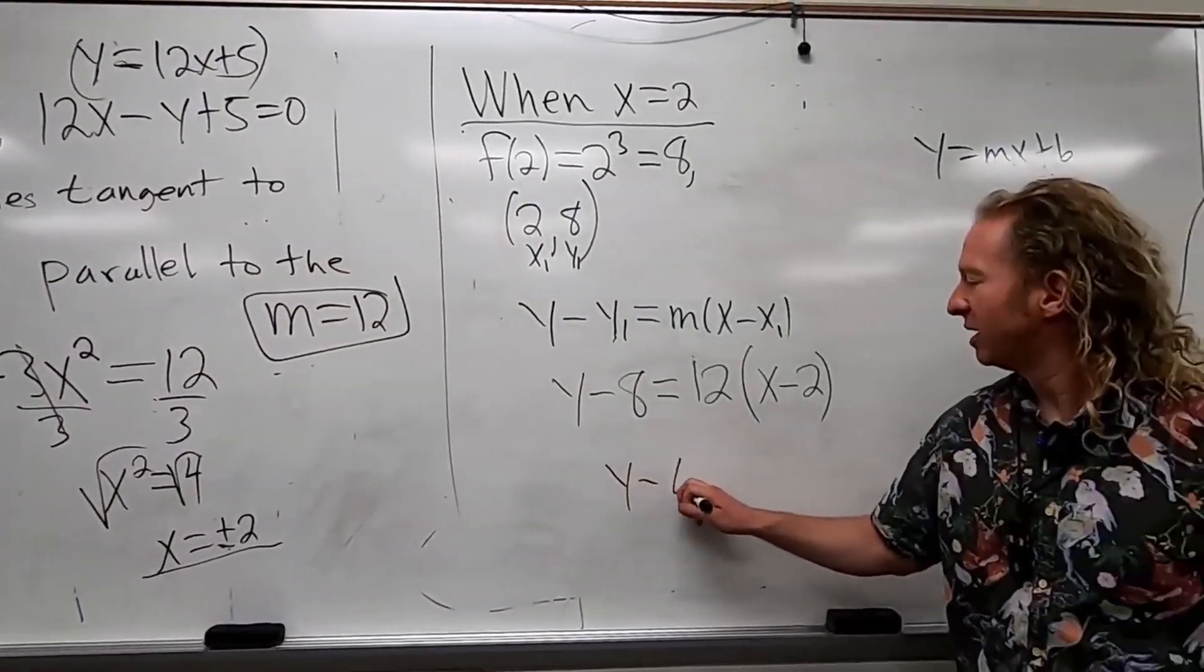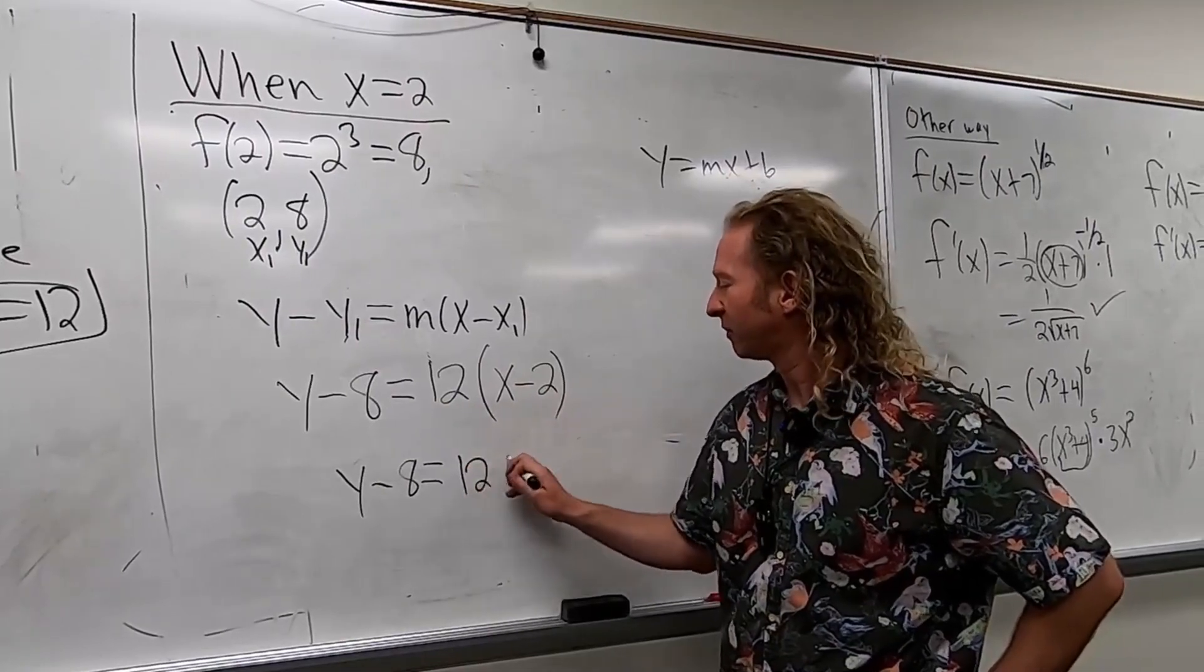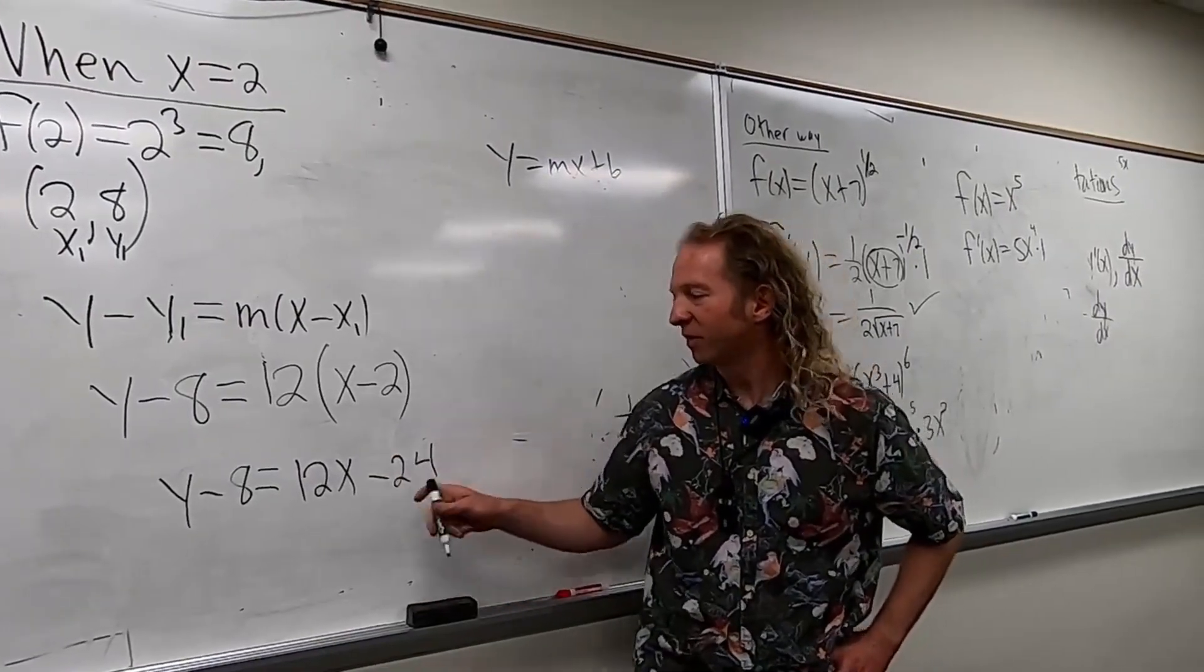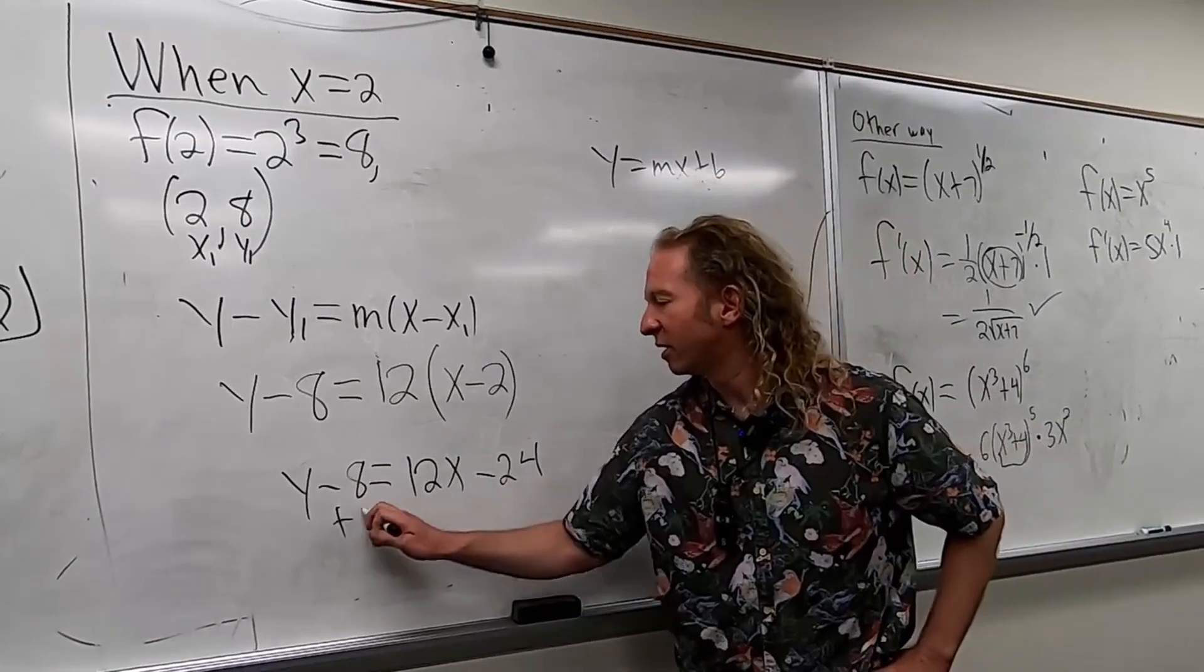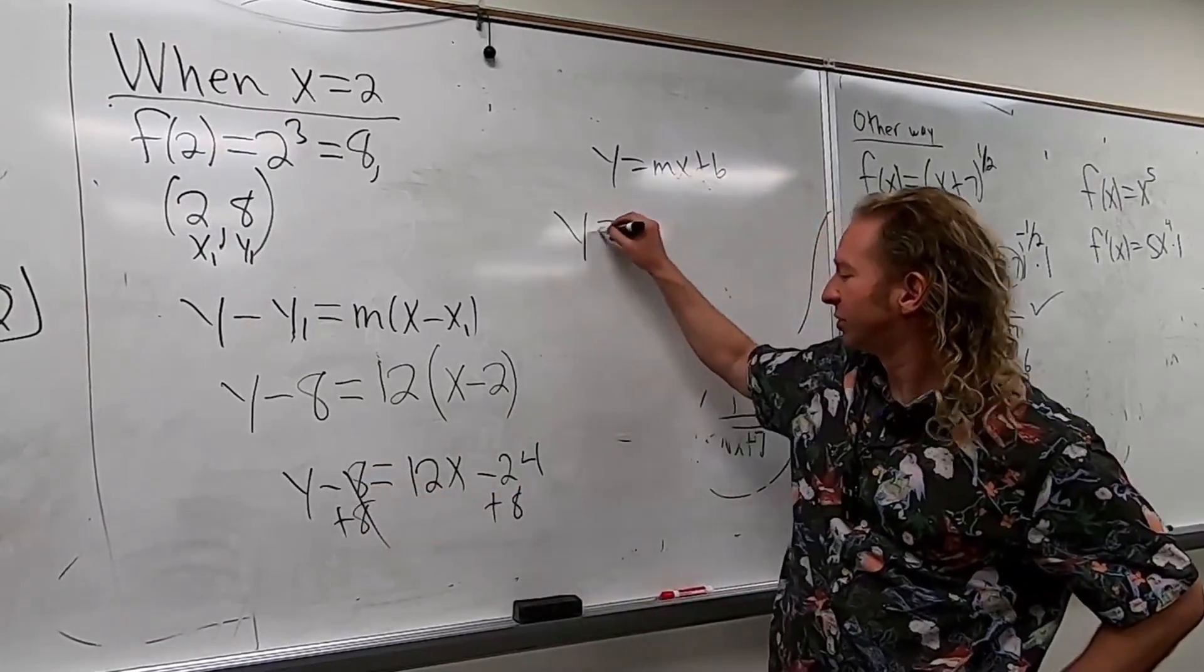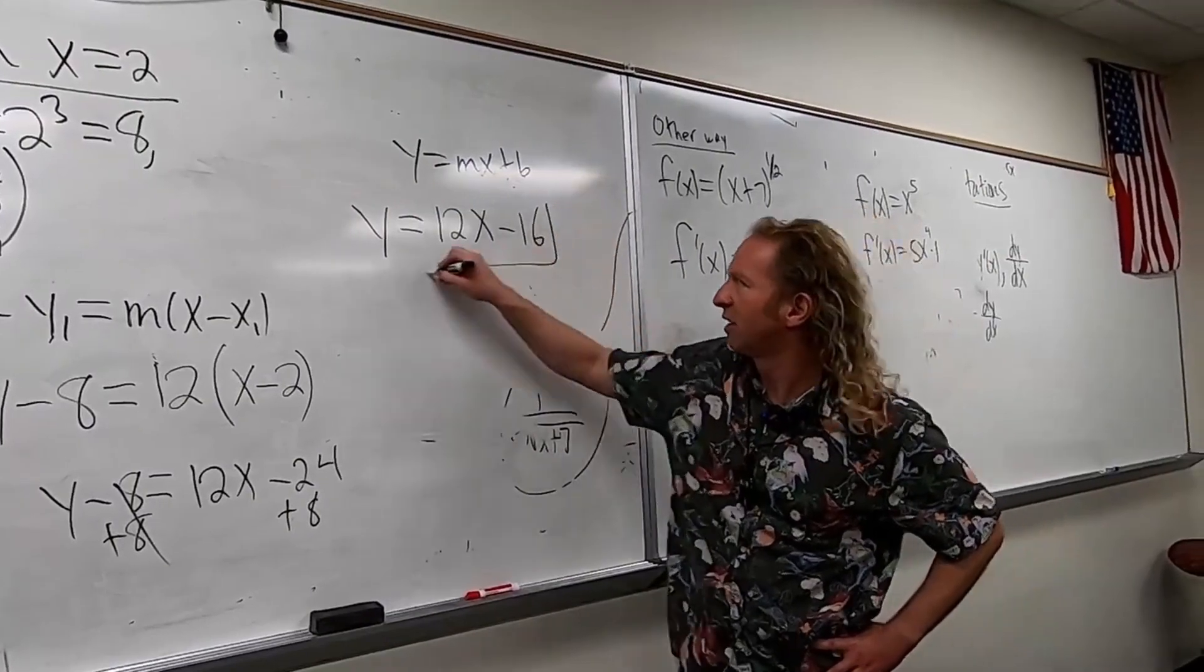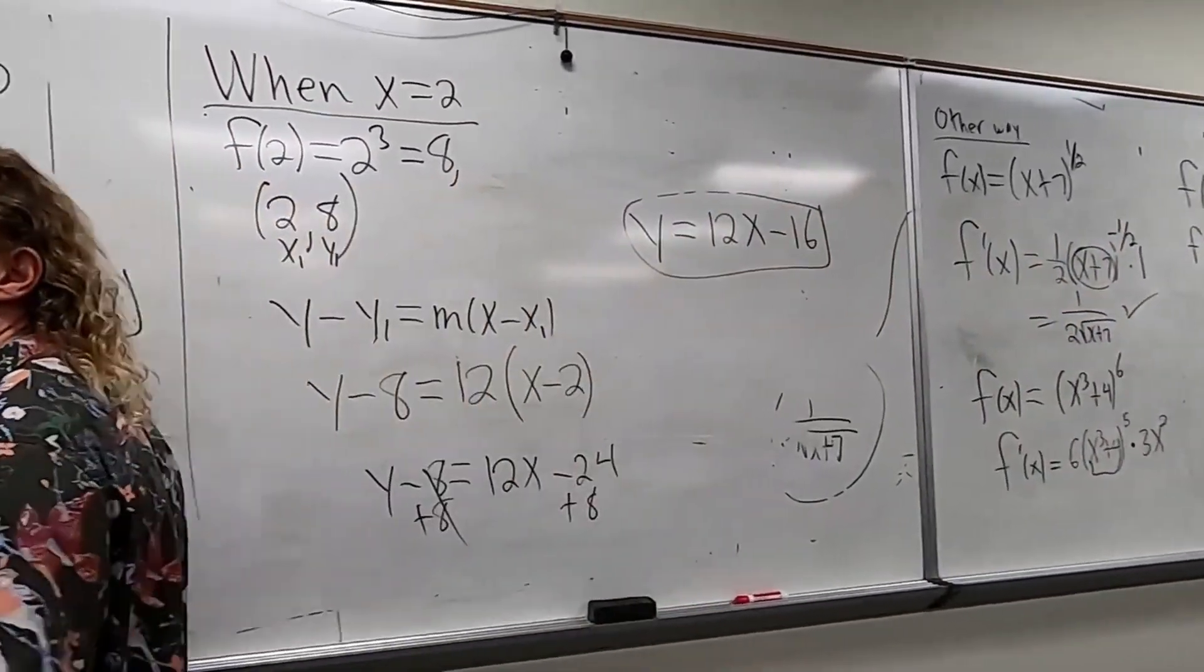So we have y minus 8. We have 12x. 12x. 12 times 2. 24. 24. And then we add 8. Add 8. So plus 8. Plus 8. So we get y equals... Is it 16? Okay. That's it. Thank God for calculating. Yeah. Don't forget your calculator. It helps, I guess.